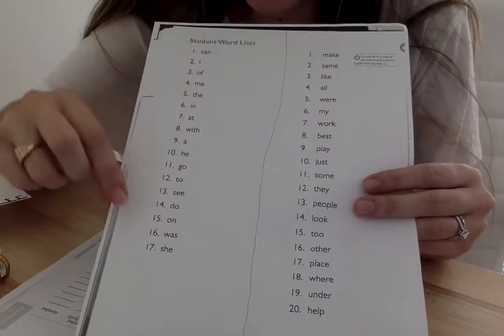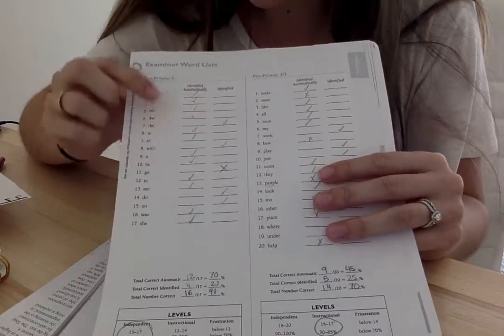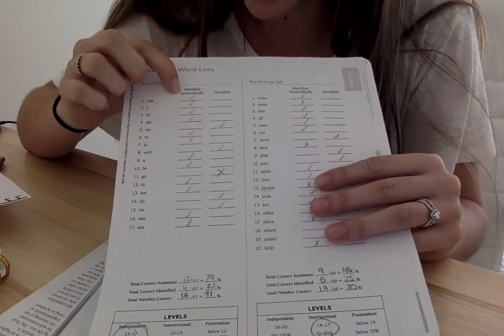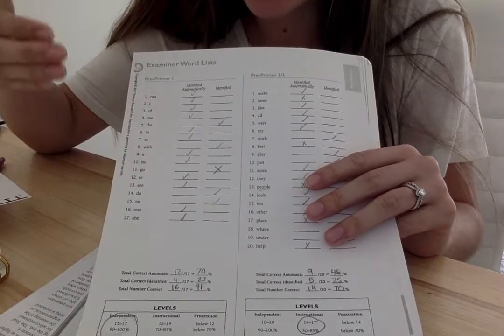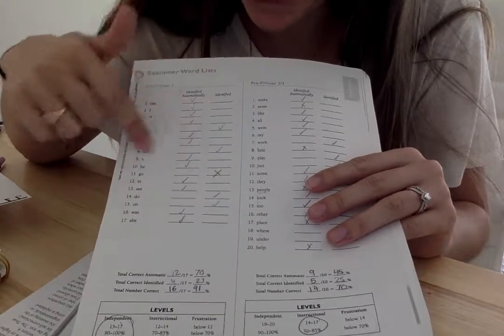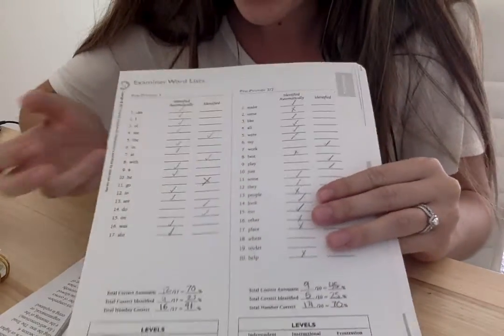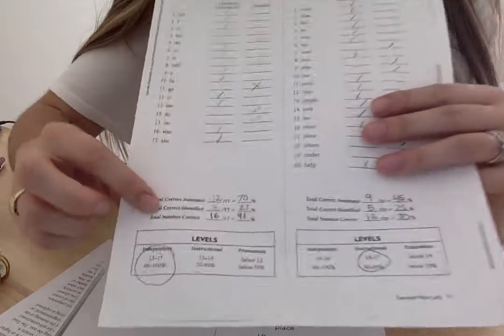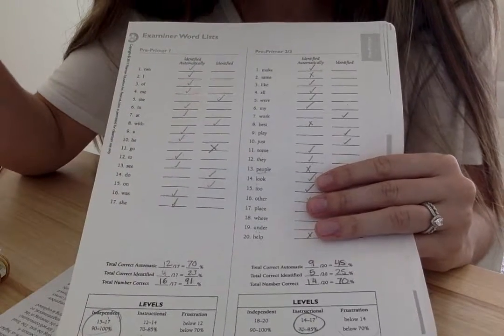So I gave him this list of words that you can see here. The first one is 1 through 17, and the next one is 1 through 20. And I kept track of all of the words that he got correct and all of the words that he didn't get correct. And I also kept track of his ability to identify them automatically and his ability to identify them either through sounding out or he took a few extra seconds, took a little bit longer to figure them out. So on the first list, as you can see, he only missed one word, which was the word 'go,' I believe. And so that was really good.